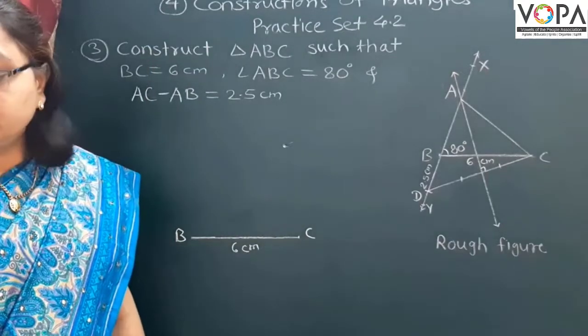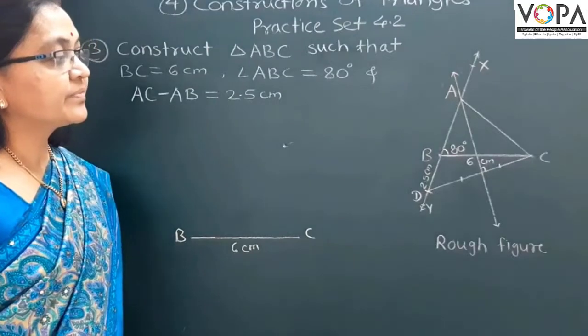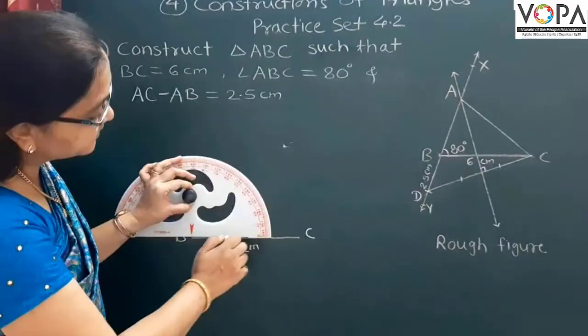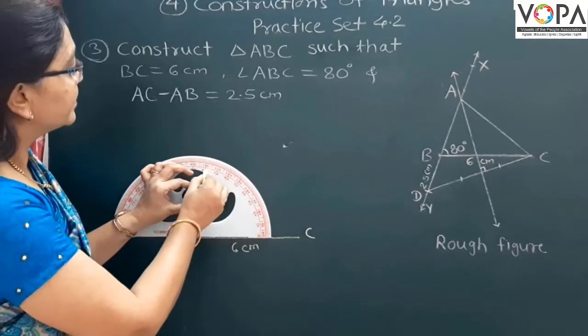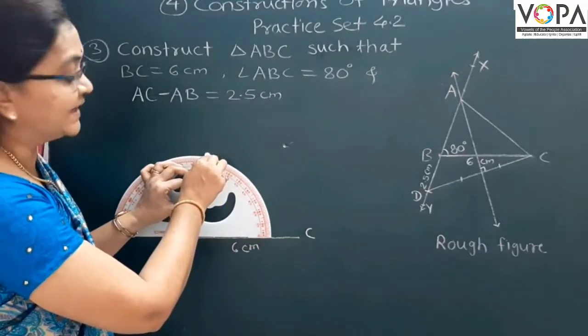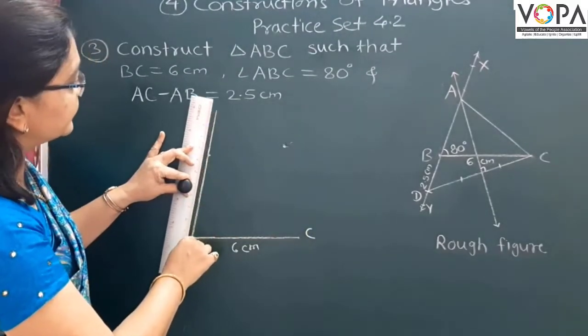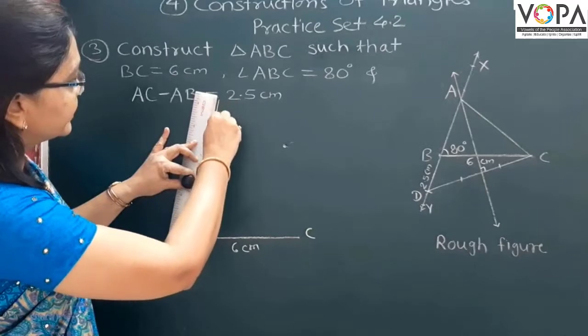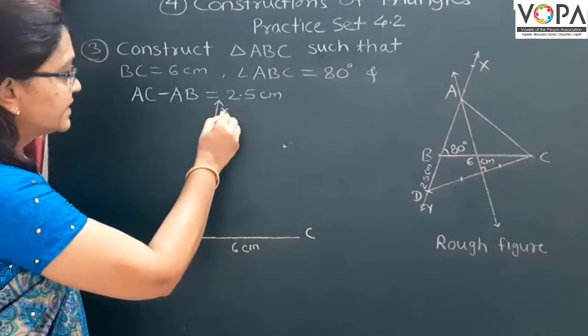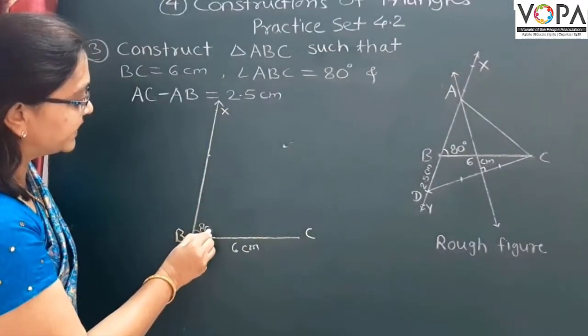Then next step is to draw this ray BX which makes an angle of 80 degree. Here is zero. Draw angle having measure 80 degree. This one is ray BX.